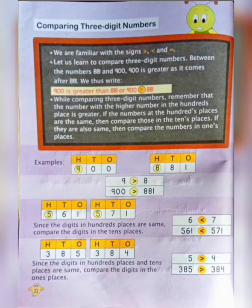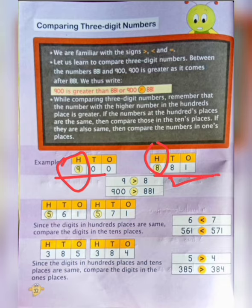Let's see the first example: 900 and 881. First we will compare the hundreds place — 9 and 8. Since 9 is greater than 8, our answer will be greater than.